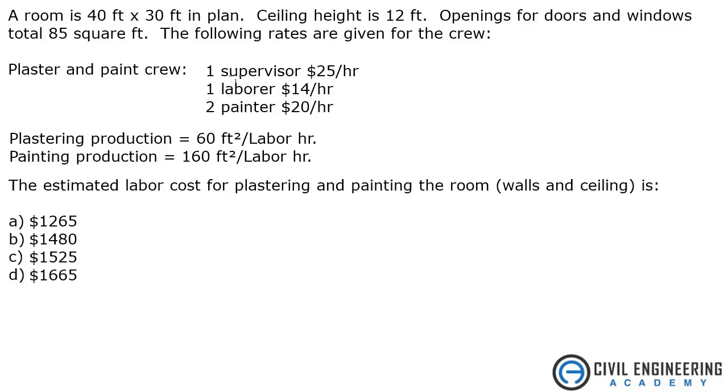Plaster and paint crew: 1 supervisor at $25 an hour, 1 laborer at $14 an hour, 2 painters at $20 an hour. Plastering production is 60 square feet per labor hour, and painting production is 160 square feet per labor hour. Estimate the labor cost for plastering and painting the room, walls and ceilings.